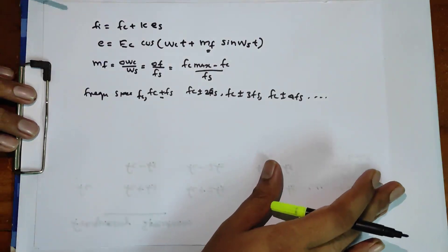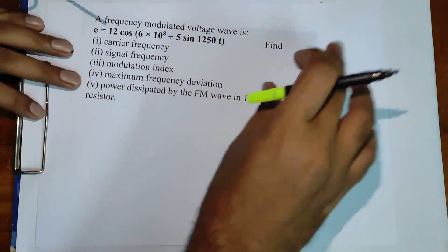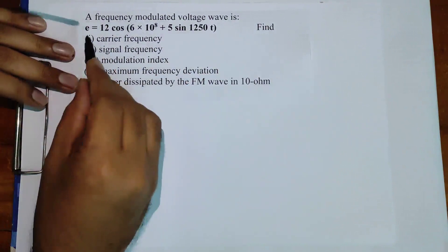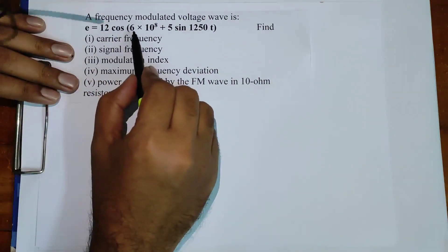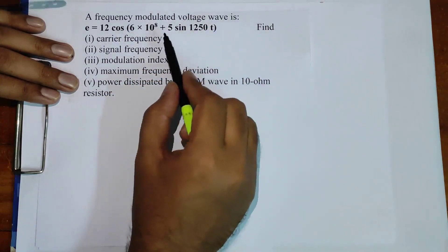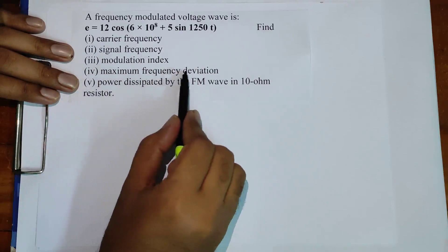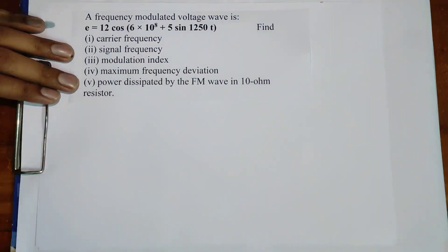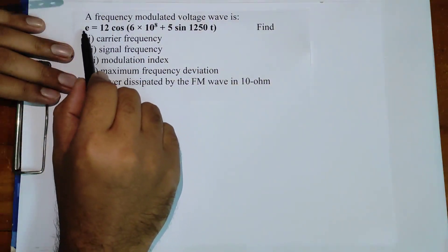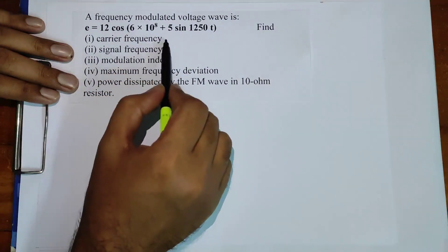Now let us solve a problem. The question is: a frequency modulated voltage wave is given by E = 12 cos(6×10⁸ t + 5 sin(1250t)). Find the carrier frequency, signal frequency, modulation index, maximum frequency deviation, and the power dissipated by the FM wave in a 10 ohm resistor. We need to identify the parameters by comparing this with the general FM equation.